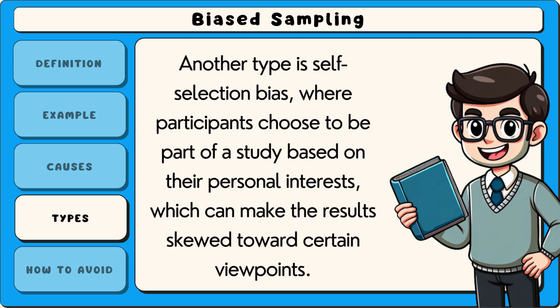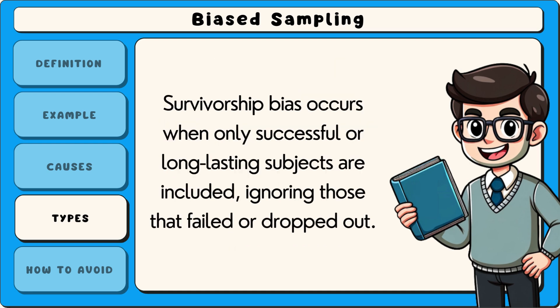Another type is self-selection bias, where participants choose to be part of a study based on their personal interests, which can make the results skewed towards certain viewpoints. Survivorship bias occurs when only successful or long-lasting subjects are included, ignoring those that failed or dropped out.